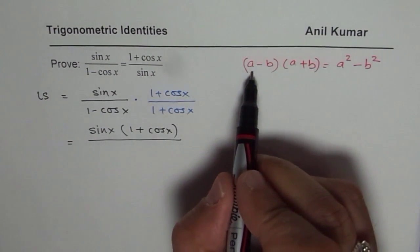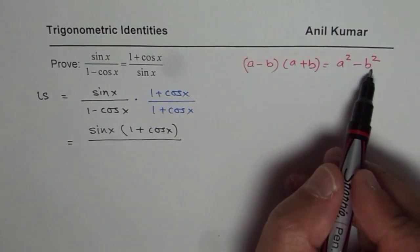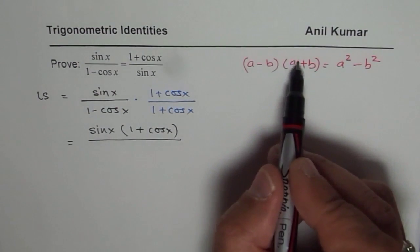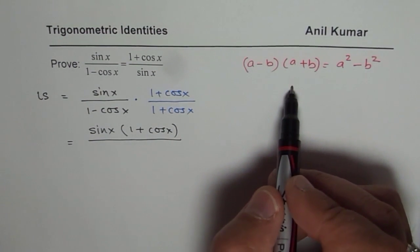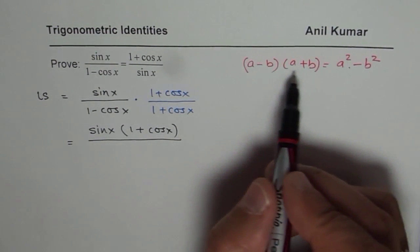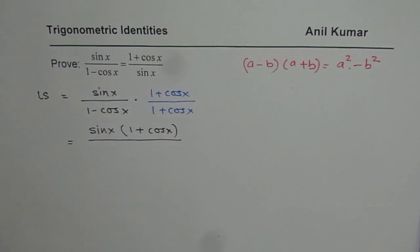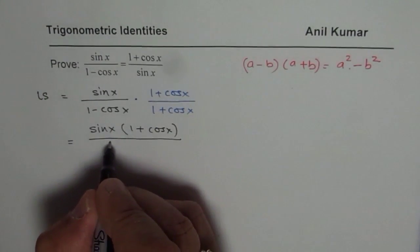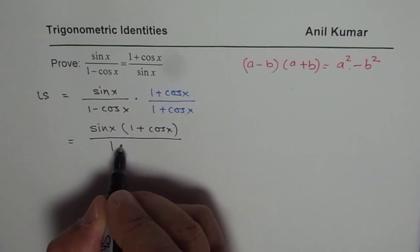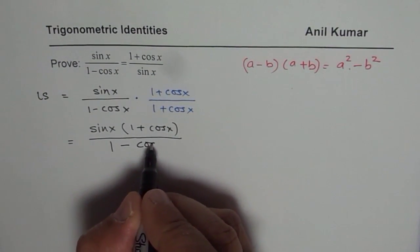So, remember, a minus b times a plus b is a square minus b square. I know, some of you will just expand, simplify, and in three steps get the same result. You do not have to do that. When you see a minus b times a plus b, I will recommend straight away write 1 square minus cos square x. Do you see that?